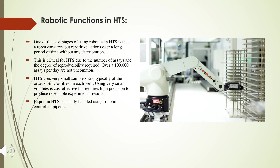Robotic functions in HTS: one of the great advantages of using robotics in HTS is that they can do repetitive work over a long period of time without any degradation in performance — something humans cannot do when running a large number of assays continuously in a single day. The sample size is very small, requiring microliter quantities in every well, so high precision and repeatability are required. Robotic-controlled pipettes are used for handling liquids in the HTS process.